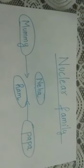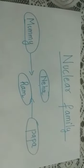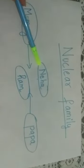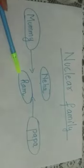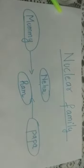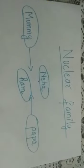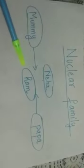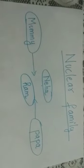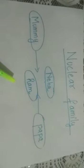Now, what is a nuclear family? You can see here, in a nuclear family, we see parents — mummy, papa — and their daughter Neha and their son Ram. So, all together there are only four members in a family. There are no grandparents, no uncle and no aunt. That means mummy, papa, Neha and Ram. So, this is a nuclear family — a small family.